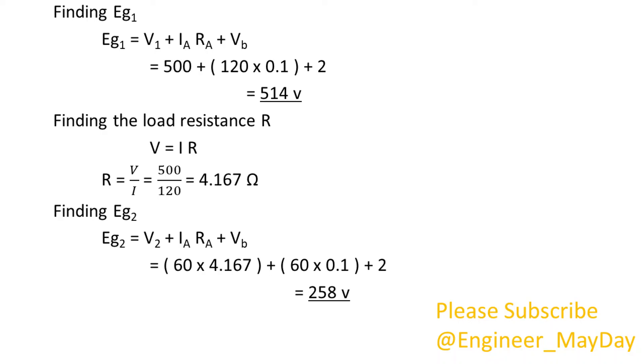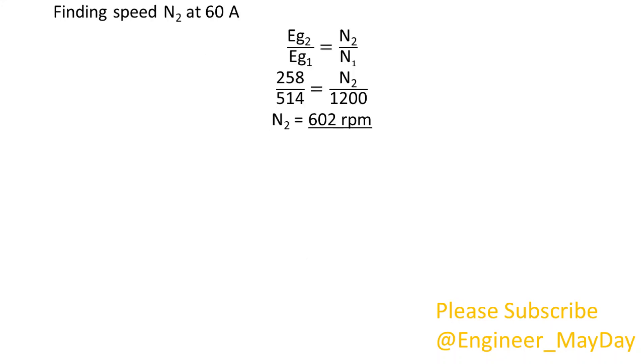Finding EG2: EG2 equals 258 volts. Finding speed N2 at 60 amperes: N2 equals 602 RPM.